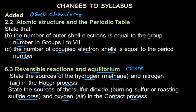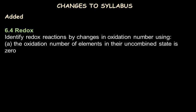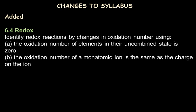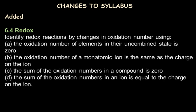Another main addition is in the topic of redox. Previously a small topic, it now includes identifying redox reactions by changes in oxidation number. Students must know that the oxidation number of elements in their uncombined state is zero, the oxidation number of a monatomic ion equals the charge on the ion, the sum of oxidation numbers in a compound is zero, and the sum in an ion equals the charge on the ion.